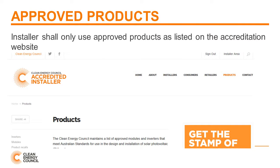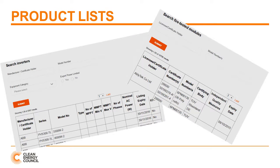Be aware that if you wish to claim Small Scale Technology Certificates, or STCs, you must only install CEC-approved PV modules and inverters. To find such lists, refer to the Product section on the screen. Note that you do not have to log into the Installer area to access this section. By only installing products on the approved lists, you can be confident that your components meet the relevant requirements as set out in the applicable standards. This is a basic requirement for creating STCs, and also a requirement of State Electrical Safety Acts. For example, when installing modules on a building, you must ensure they meet Fire Class C. If you install a module from the PV module list on the screen, you have the confidence of knowing that you are complying with the requirements set out by the Clean Energy Council, Clean Energy Regulator, and the Electrical Safety Regulator.